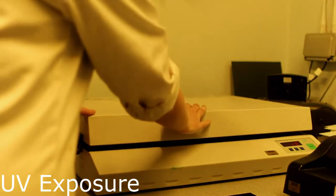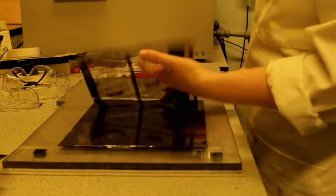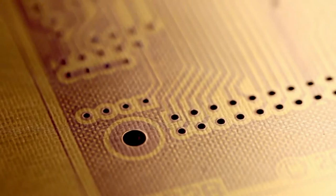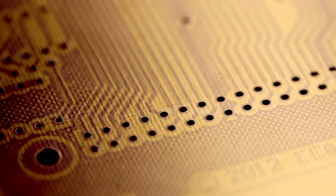The board is then exposed to ultraviolet light which hardens the areas of the photoresist layer that aren't covered by the opaque areas of the transparency. The hardening makes the photoresist resistant to the etching process and the process is then repeated for the bottom layer.